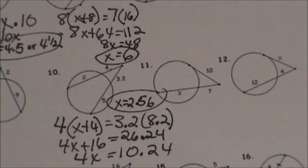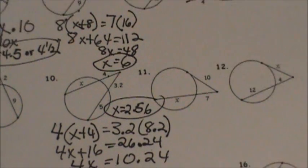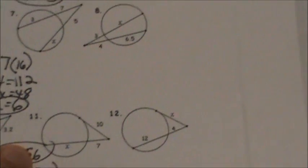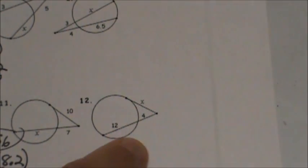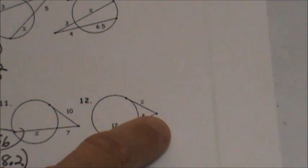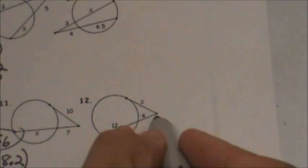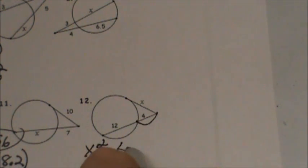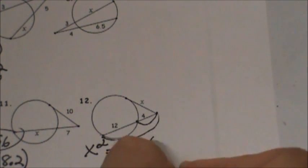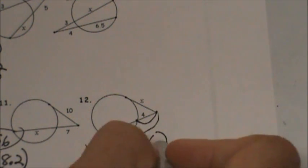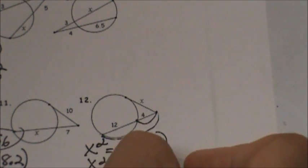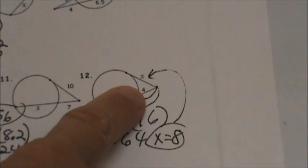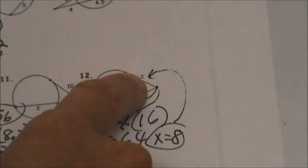Now let's look at a problem with a tangent and a secant — number 12. The tangent must be squared. We set x squared equal to the outside part (4) times the whole secant (16). So x squared equals 64, meaning x equals 8. We discard the negative square root since length can't be negative.